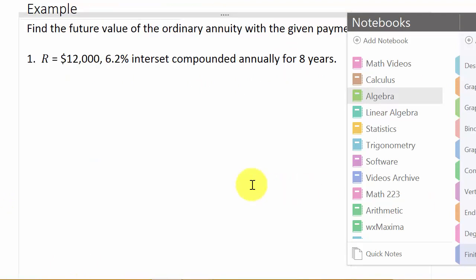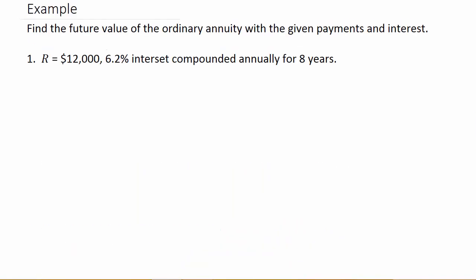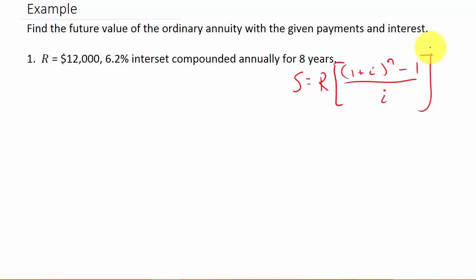Let's go ahead and look at our examples — I've got three examples. Find the future value of the ordinary annuity with the given payments and interest. Let's write down the formula: S equals R times (1 plus i) to the N minus 1, over i. For the first example, R is 12,000. That's the payment made at 6.2% interest compounded annually for eight years — so $12,000 at the end of each year.